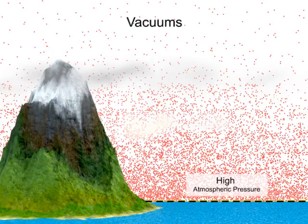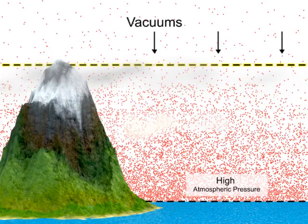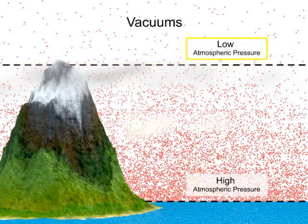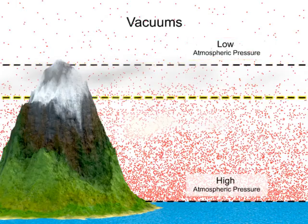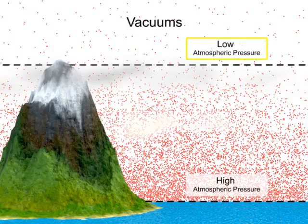As elevation increases, the total amount of atmosphere directly above the surface is much less than at sea level, therefore the atmospheric pressure is much lower. Atmospheric pressure decreases as elevation increases.